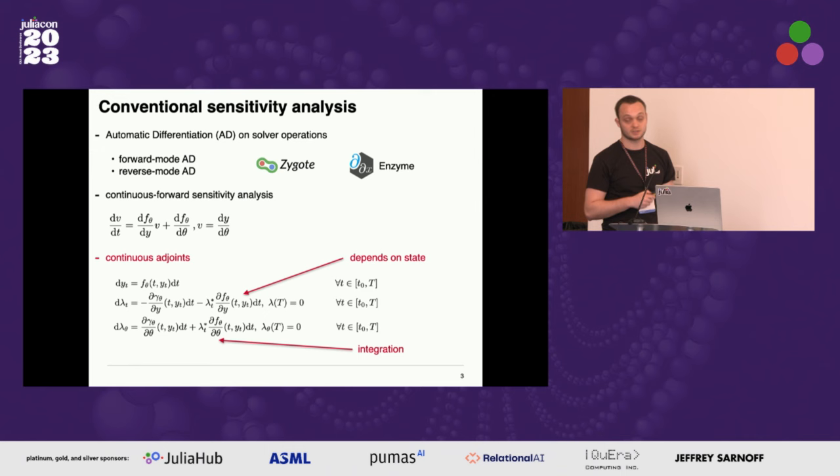There's also an adjoint version for that problem which scales efficiently with respect to the number of parameters. We similarly get a set of differential equations where lambda is the adjoint state. The first thing you might notice is that in this differential equation for lambda, there are these vector transposed Jacobian products, which is a typical sign that you're doing something in reverse mode.